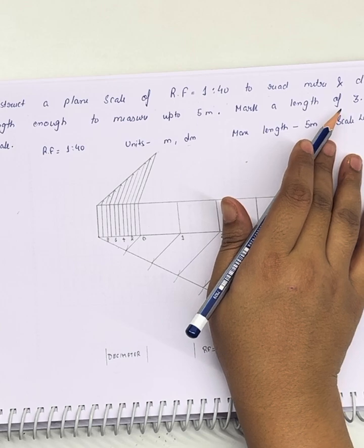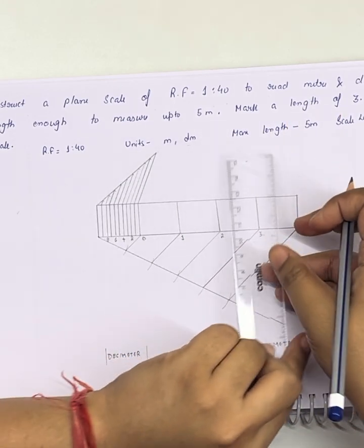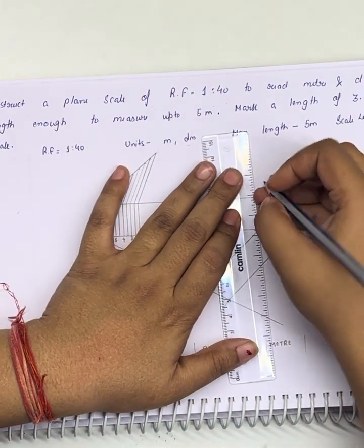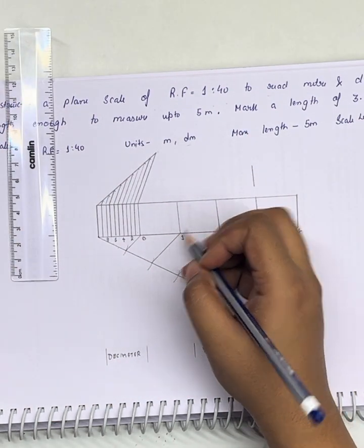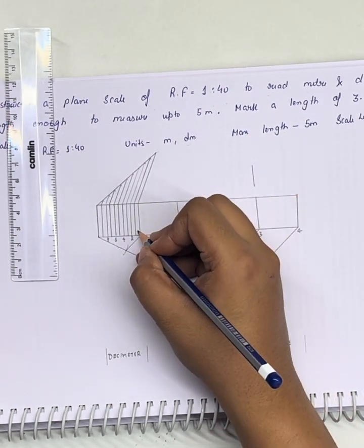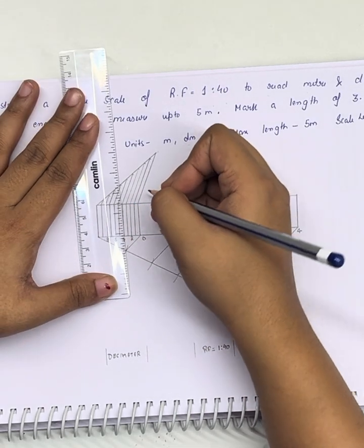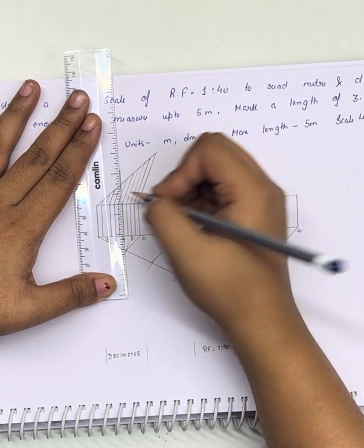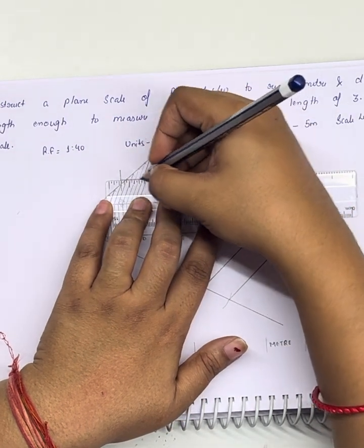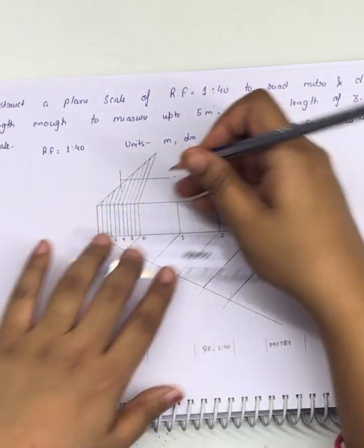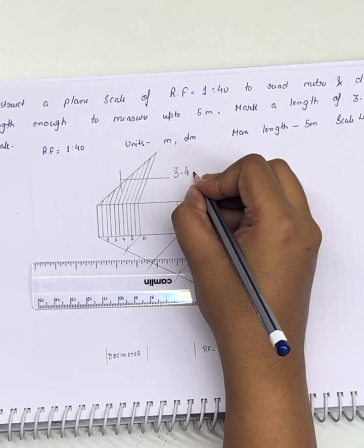Now we need to show a distance of 3.4 meters. So we will be taking distance 3 on the meter side, and 0.4, this will be 4 decimeters: 1, 2, 3, and 4. This will be the 0.4 part. So we will mark it here. So this much is the distance of 3.4 meter length. This is 3.4 meters.